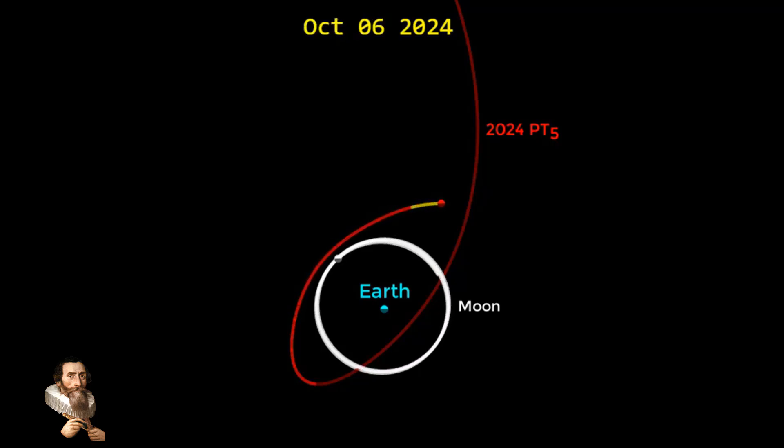This event will occur from September 29th to November 25th, marking a unique period when our planet will have an additional natural satellite, albeit for a short duration.